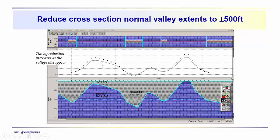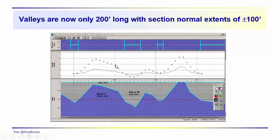So the anomalies associated with the valleys are beginning to disappear. And if we decrease that even further to plus or minus 100 feet, the anomalies, if we were so lucky as to run right across the center of them, if we knew where the valleys were that well, the anomaly is considerably muted.